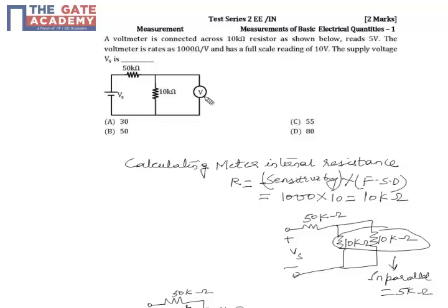Meter resistance is calculated as sensitivity multiplied by full scale voltage, so here we get 10 kilo-ohms, which is the internal resistance of the voltmeter.